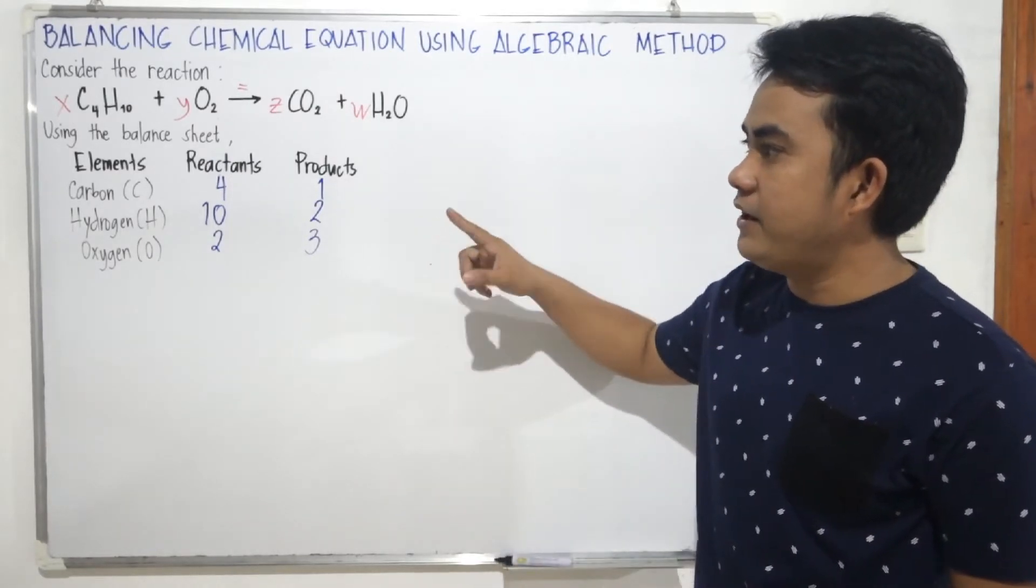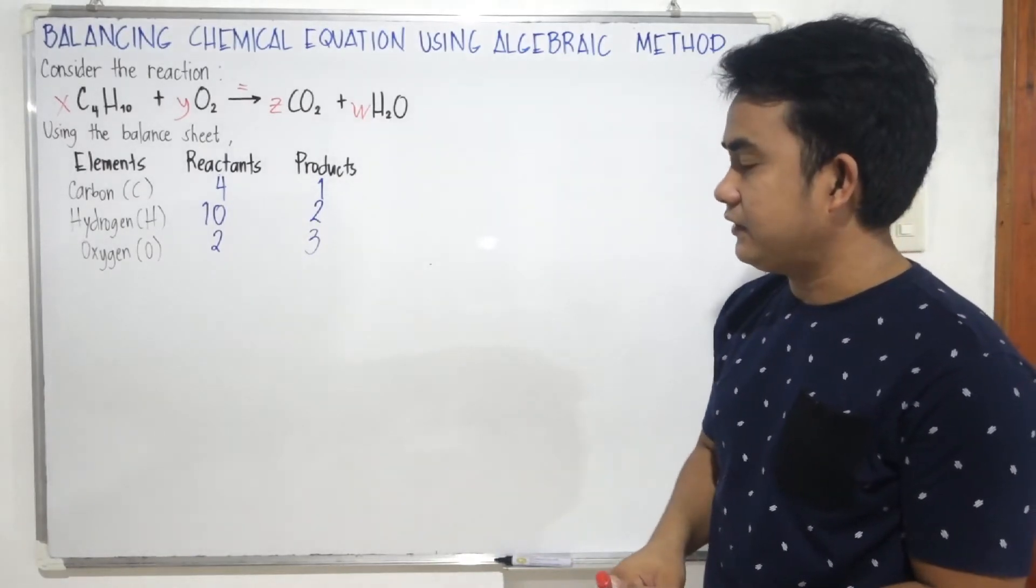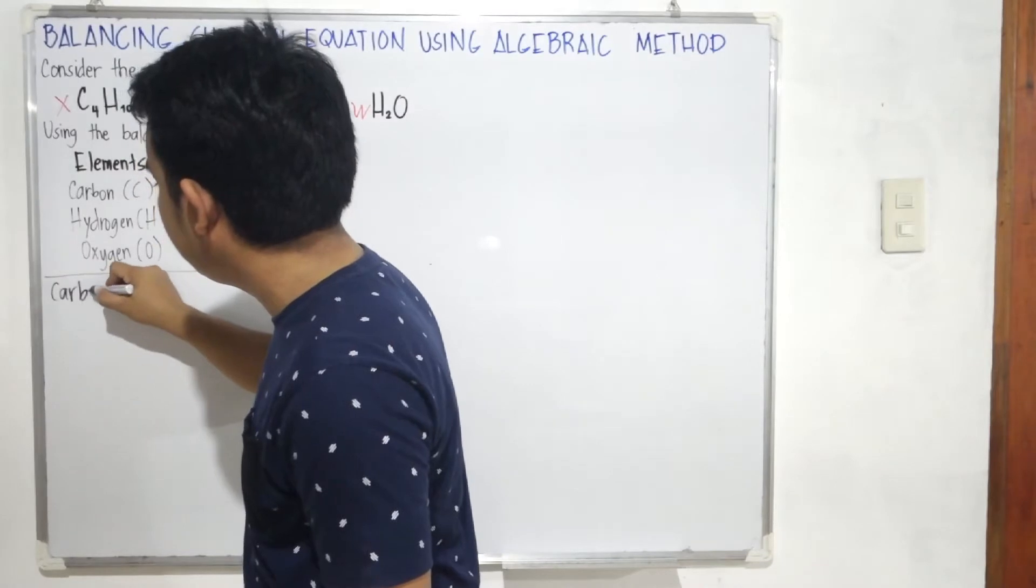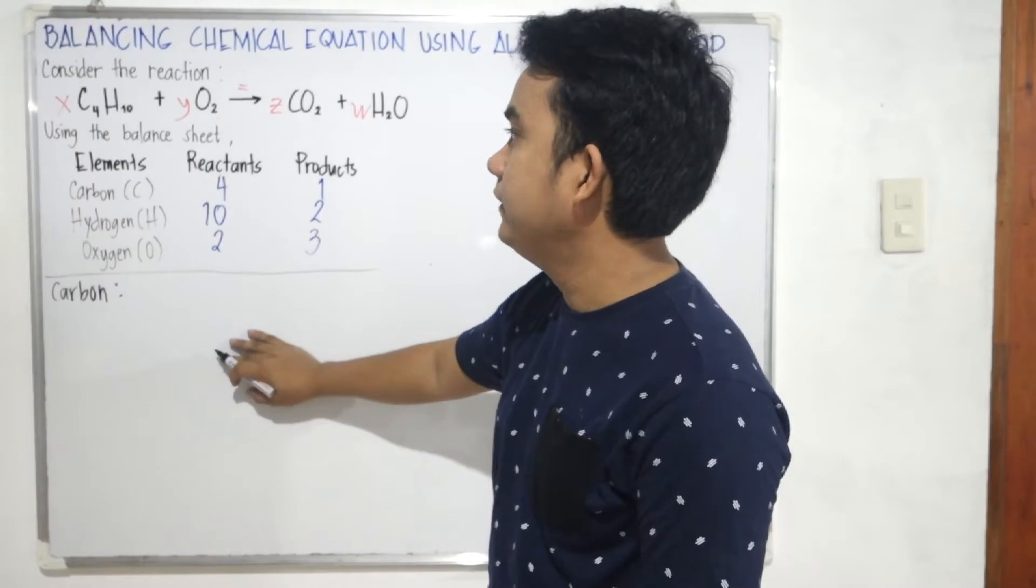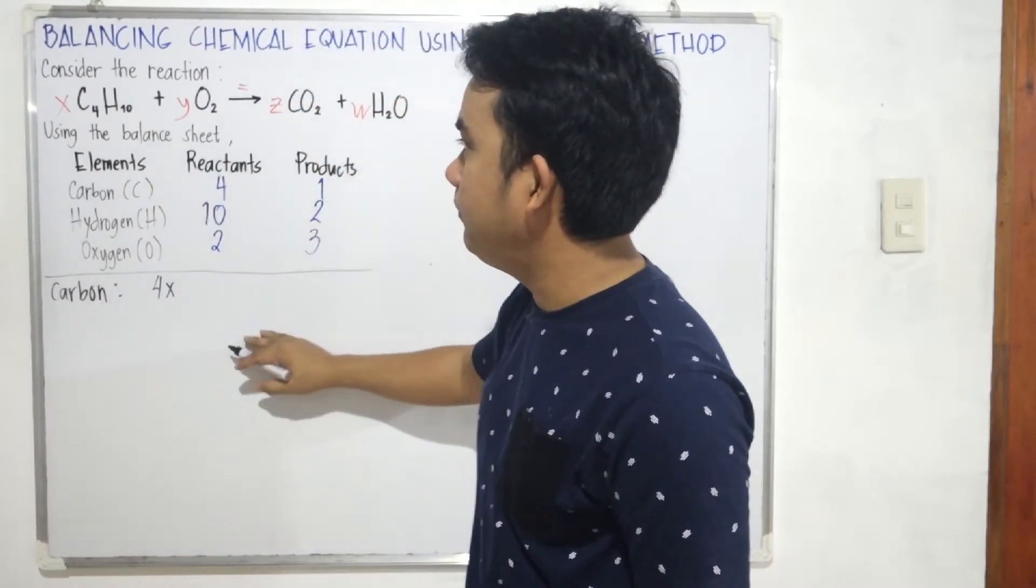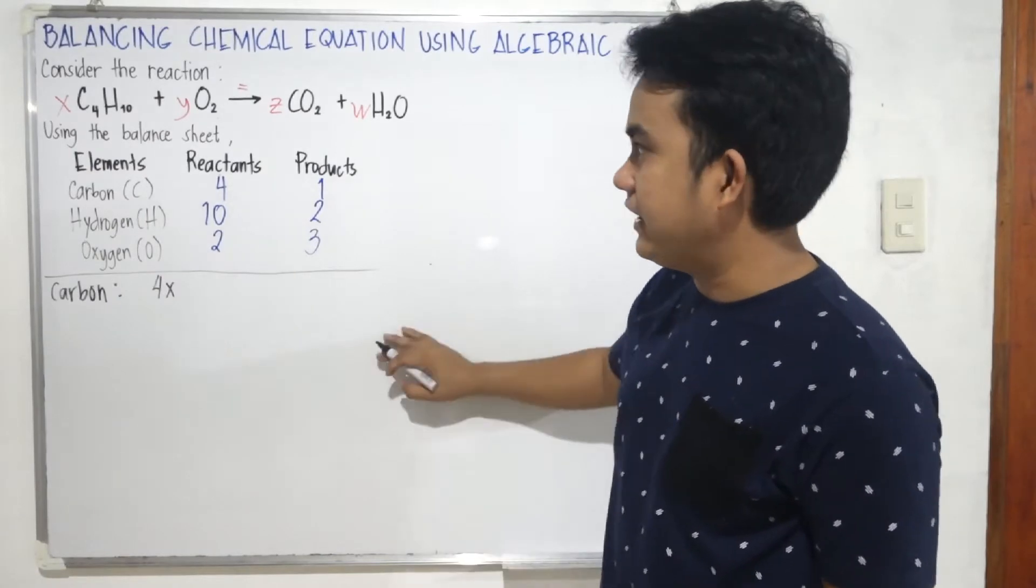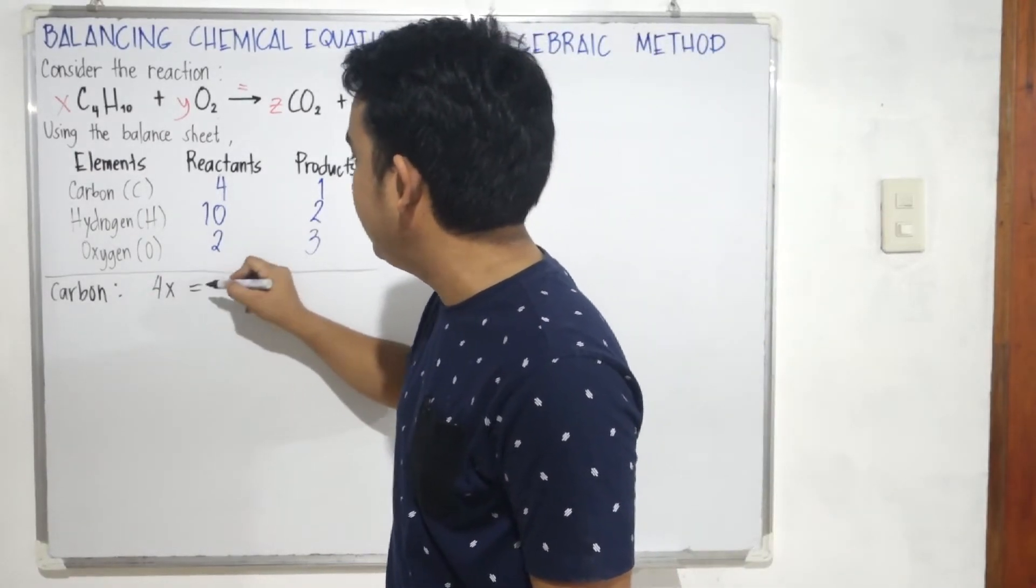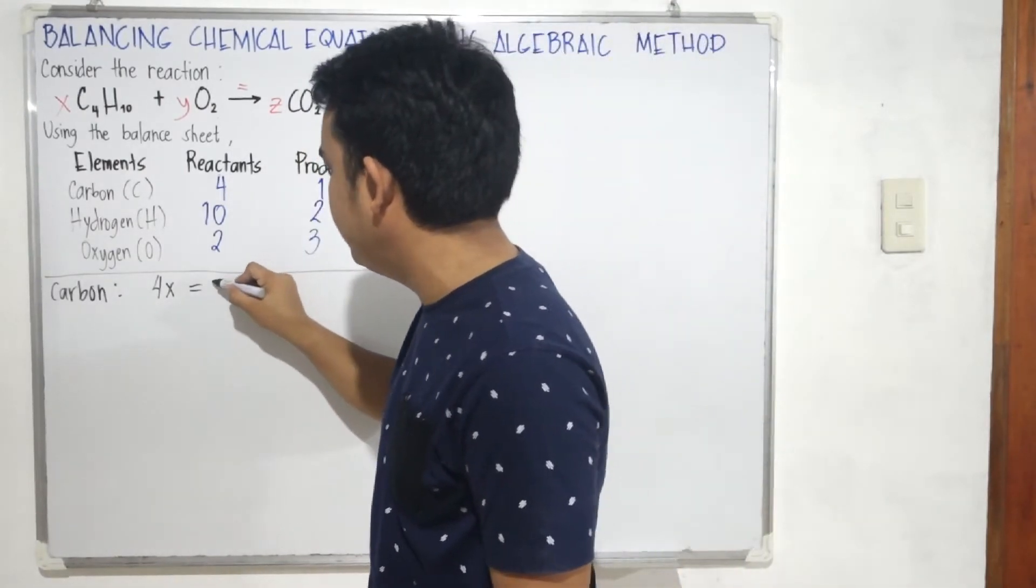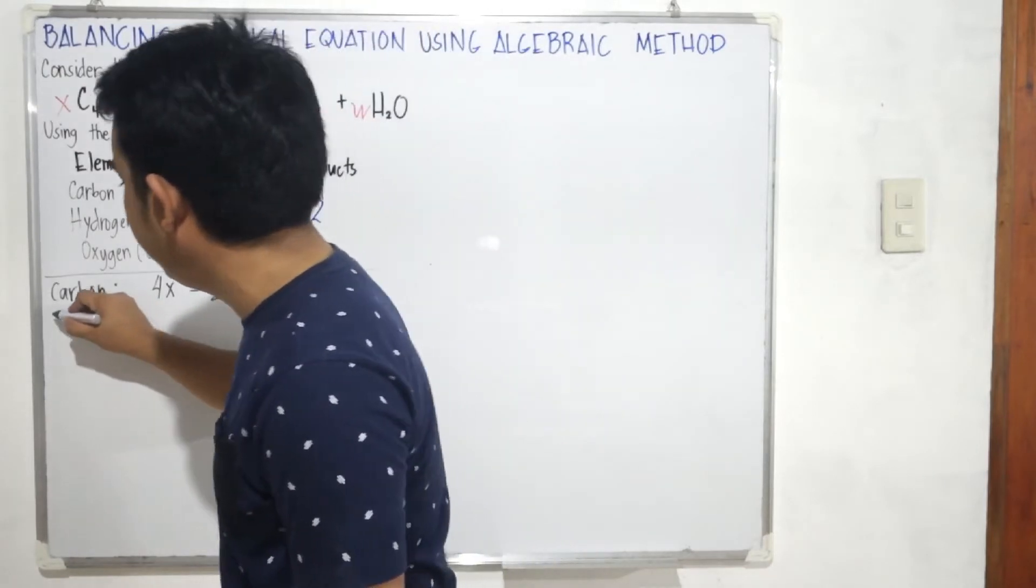Our next step is we'll create equations from each element. So we will have one equation for carbon, one equation for hydrogen, one equation for oxygen using the variables we assigned. Let's start with carbon. For carbon, we'll start with the reactant side. 4 atoms times x is 4x. There's no more carbon on the reactant side. Next is on the product side. Since the arrow sign is just equivalent to an equal sign, 4x is equal to 1 times z, which is z. This is our equation for carbon.